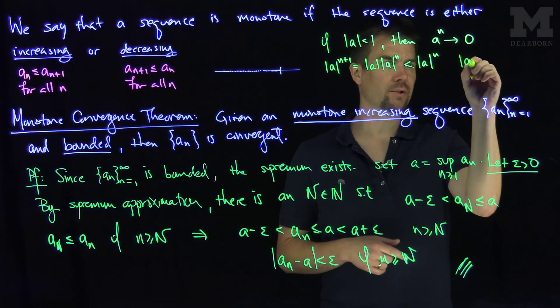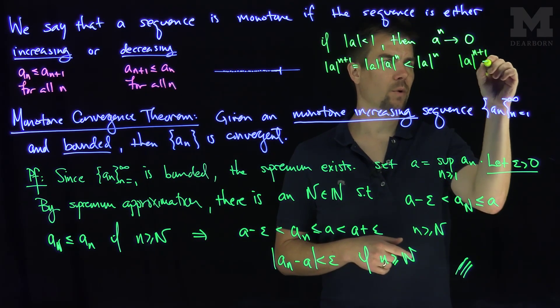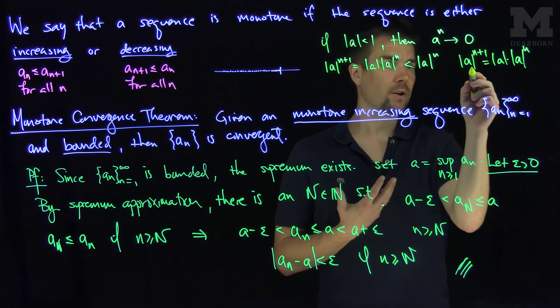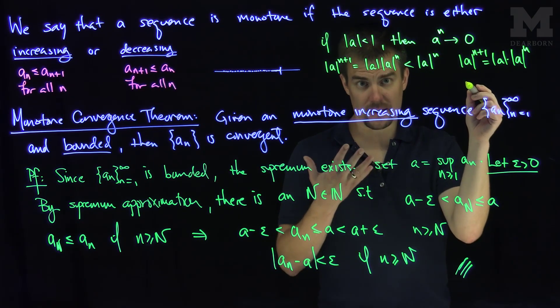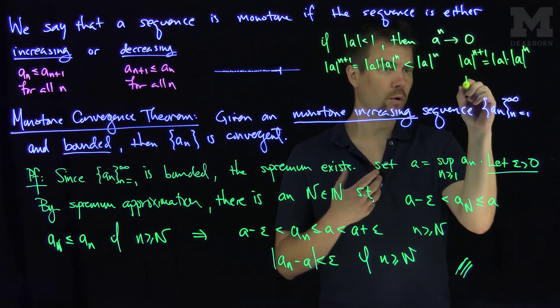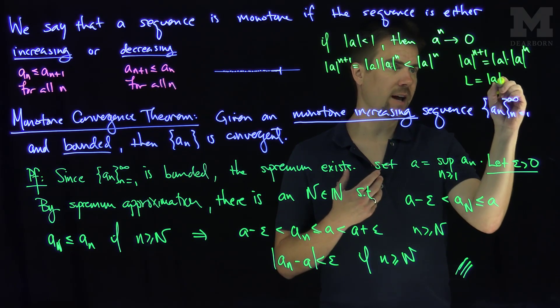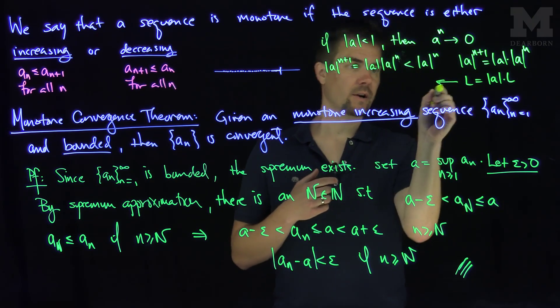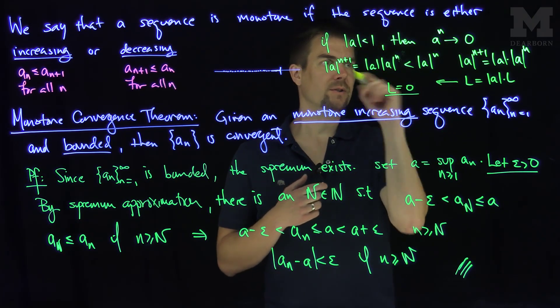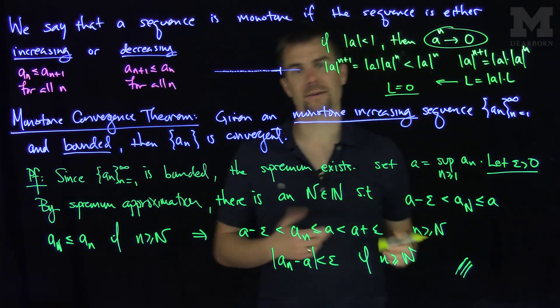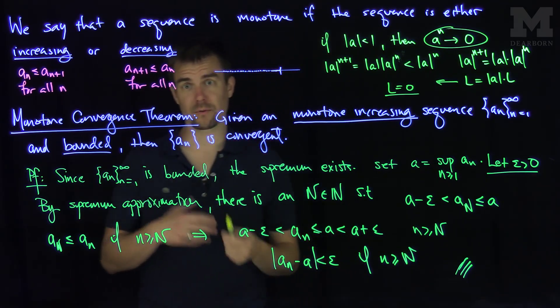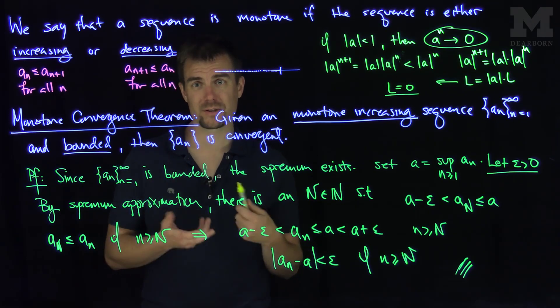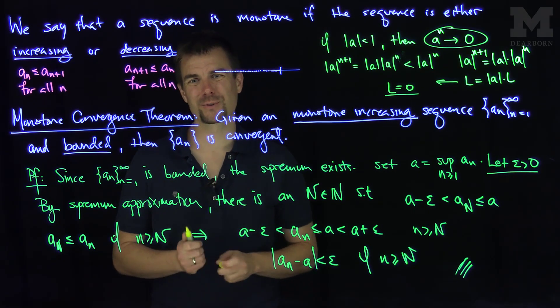So this relationship that |a^(n+1)| = |a| · |a^n|, as n goes to infinity, whatever the limit is (the infimum) will go to L, and that's equal to |a| times L. The only way that happens is if L = 0. So the monotone convergence theorem gives us a really quick proof of the fact that a^n tends to 0 if |a| < 1. Thank you very much.